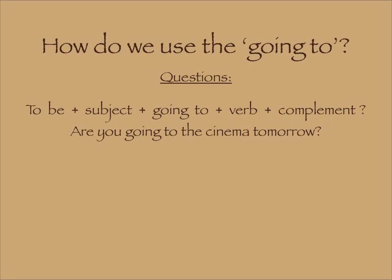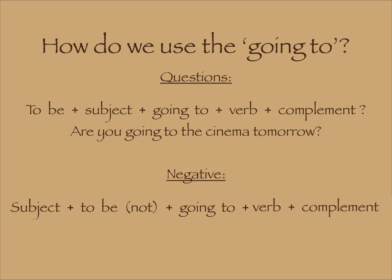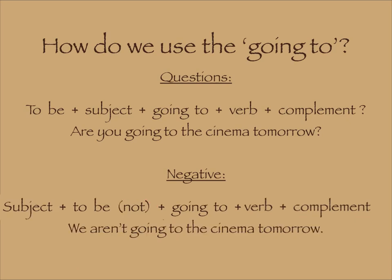In the negative form, it's very similar to the positive one. We just need to remember to put the verb 'to be' in the negative form: I am not, you aren't, she or he isn't — and then 'going to' plus the verb plus the complement. For example: 'We aren't going to the cinema tomorrow.'